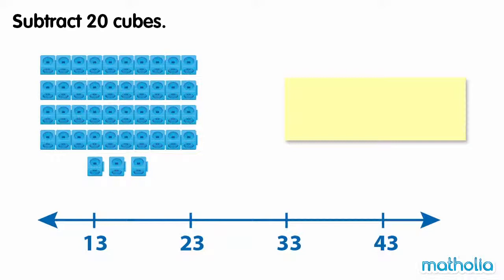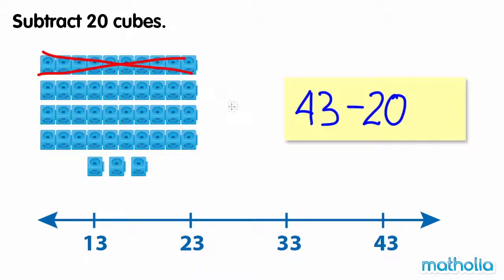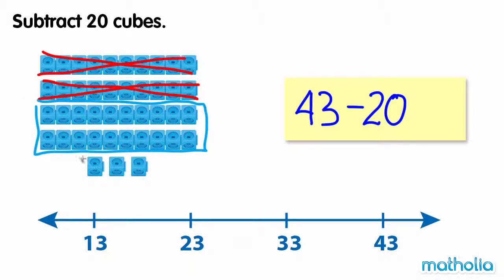Subtract 20 cubes. There are 43 cubes, so we need to find 43 minus 20. Let's cross off 20 cubes and count the cubes remaining. There are two tens and three ones remaining. Two tens and three ones are 23. So 43 minus 20 equals 23.